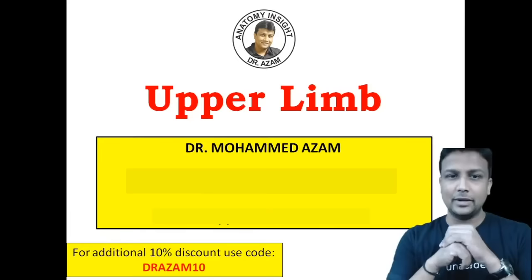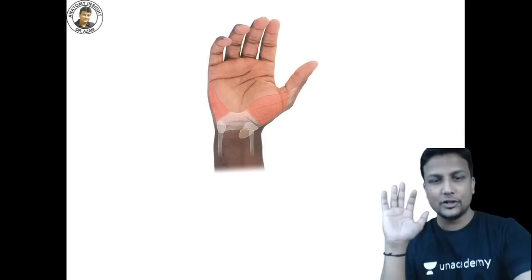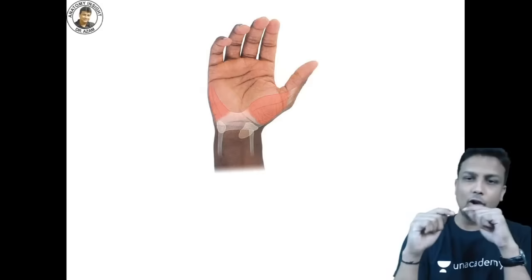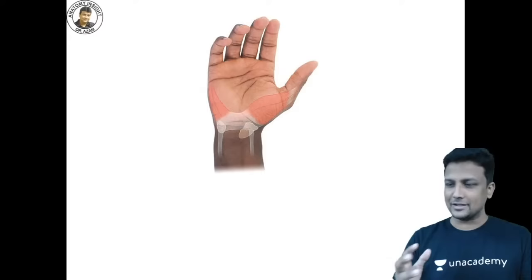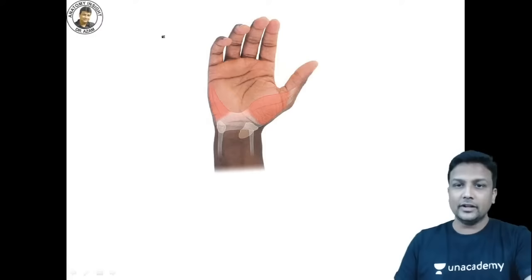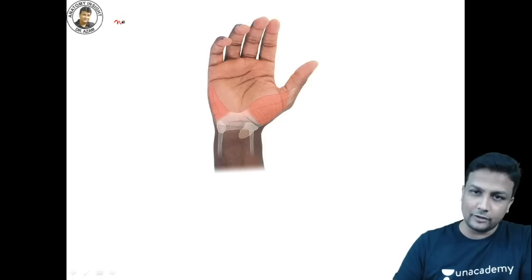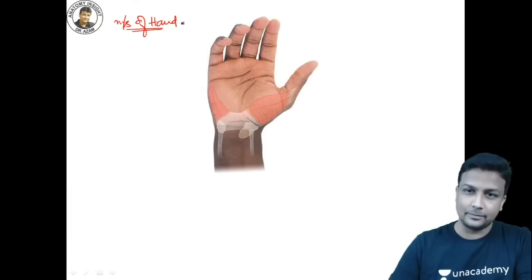In the upper limb topic, the first thing we are going to learn is the muscles of the hand. Many questions are coming from this topic nowadays. We'll discuss the muscles of the hand along with all possible nerve injuries — partial claw hand, complete claw hand, Saturday night palsy, and all those. In total, there are 20 muscles in the hand.